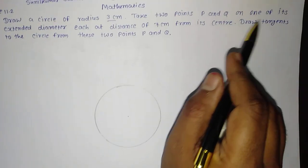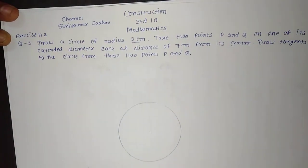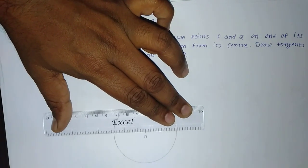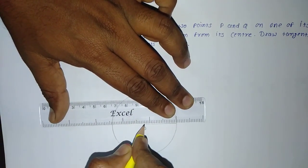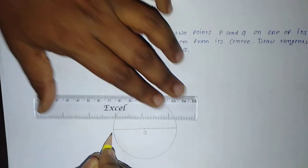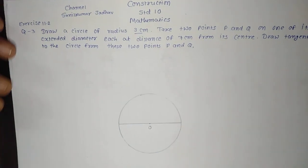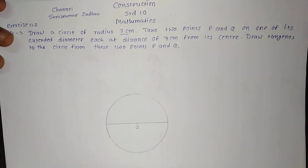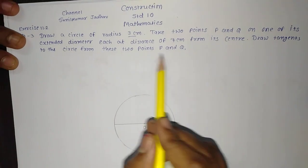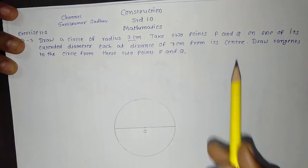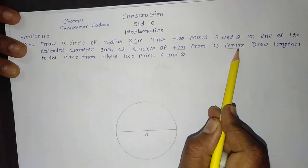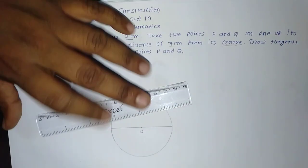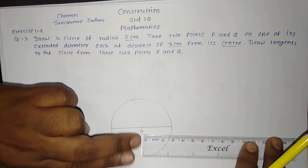Now take two points P and Q on the extended diameter. First I will give the name of the center point — let us say the point is O. Now I will draw the diameter. The diameter is a line segment having both endpoints lying on the circle and passing through the center, or it is the chord of the circle passing through the center. We have to take two points P and Q on either side of this diameter, at 7 centimeter from its center.